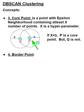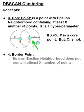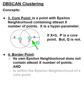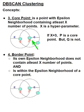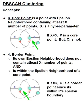The next concept is a border point, which refers to any point that doesn't qualify as a core point, but is within the epsilon neighborhood of a core point. In this example, Q is a border point, since it's within P's epsilon boundary.